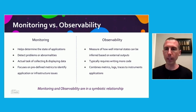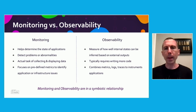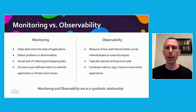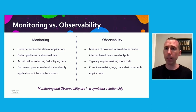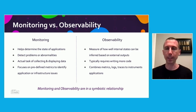That brings us to looking at monitoring and observability. I think it's important to start distinguishing between the two. Monitoring really helps determine the state of an application — it's typically a set of predefined metrics that allow you to identify application or infrastructure issues, give alerts on predefined things you want to know about while your application is running. It's the actual task of collecting pieces of data, maybe displaying them in a dashboard.